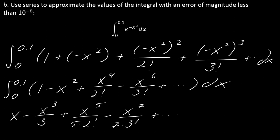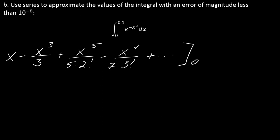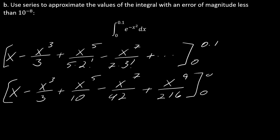This is going to give me x minus x cubed over 3 plus x to the fifth over 5 times 2 factorial minus x to the seventh over 7 times 3 factorial. This will be x minus x cubed over 3 plus x to the fifth over 10 minus x to the seventh over 42, plus x to the ninth over 216. Now we got to figure out where do we stop.